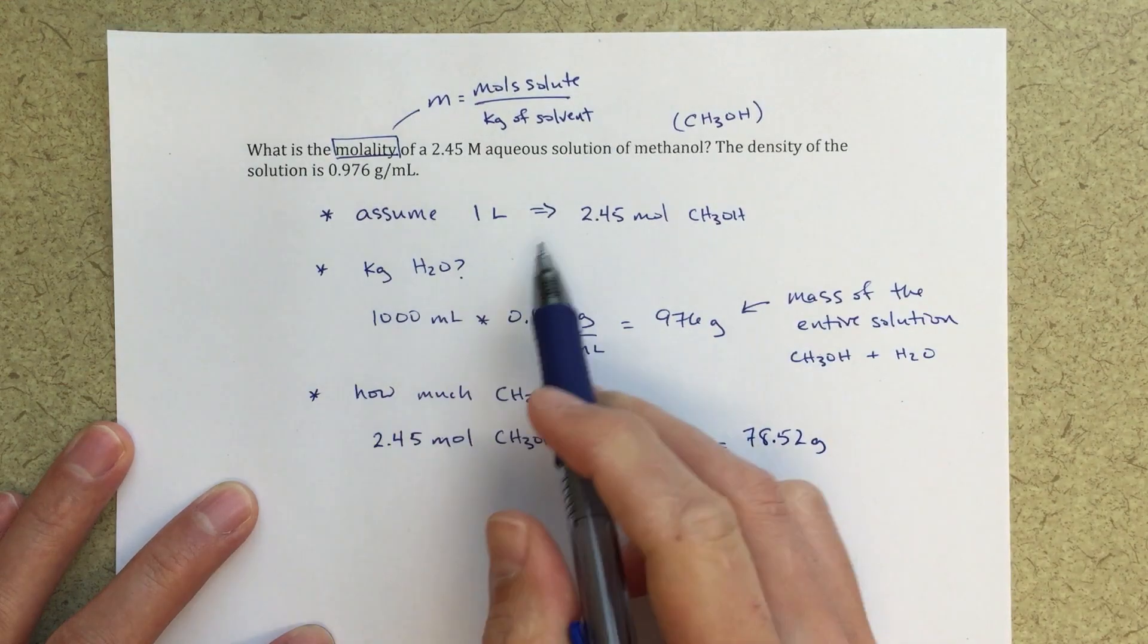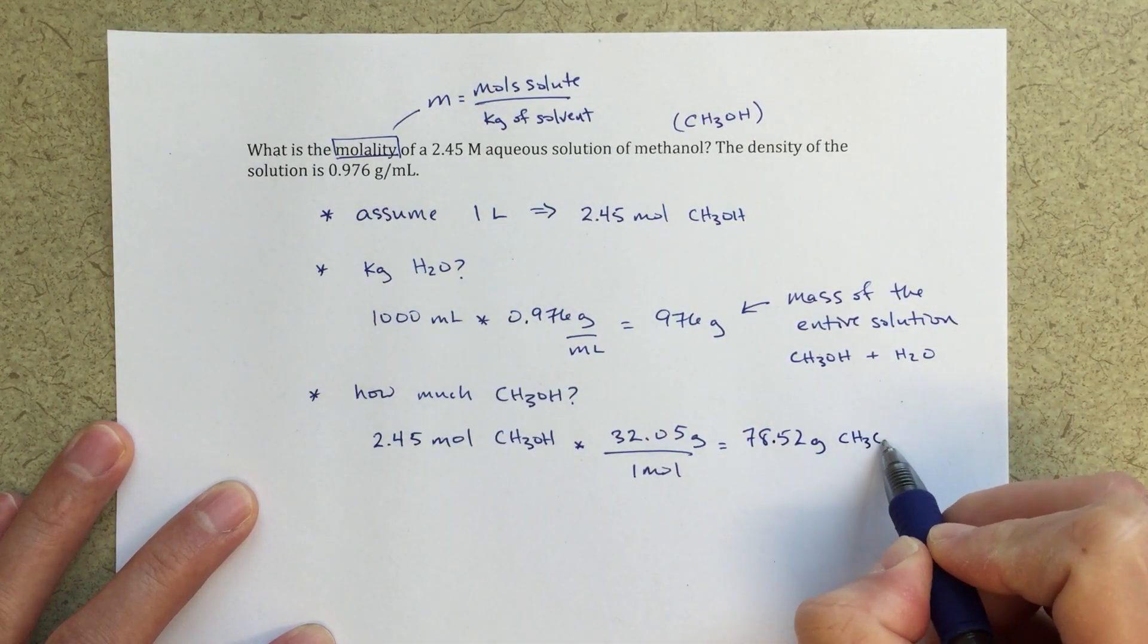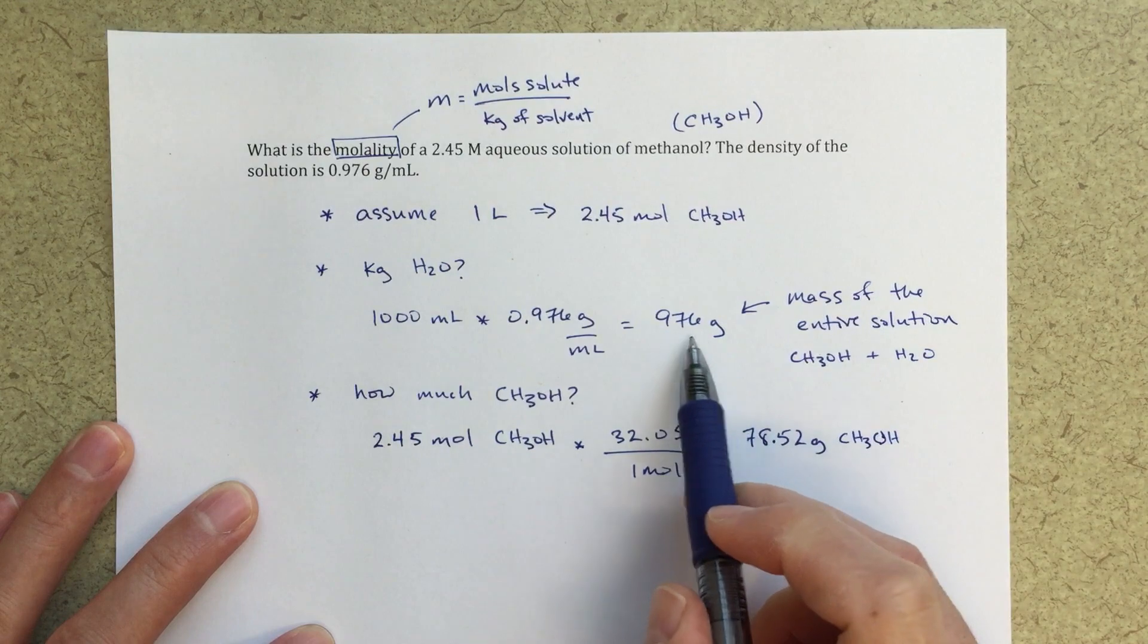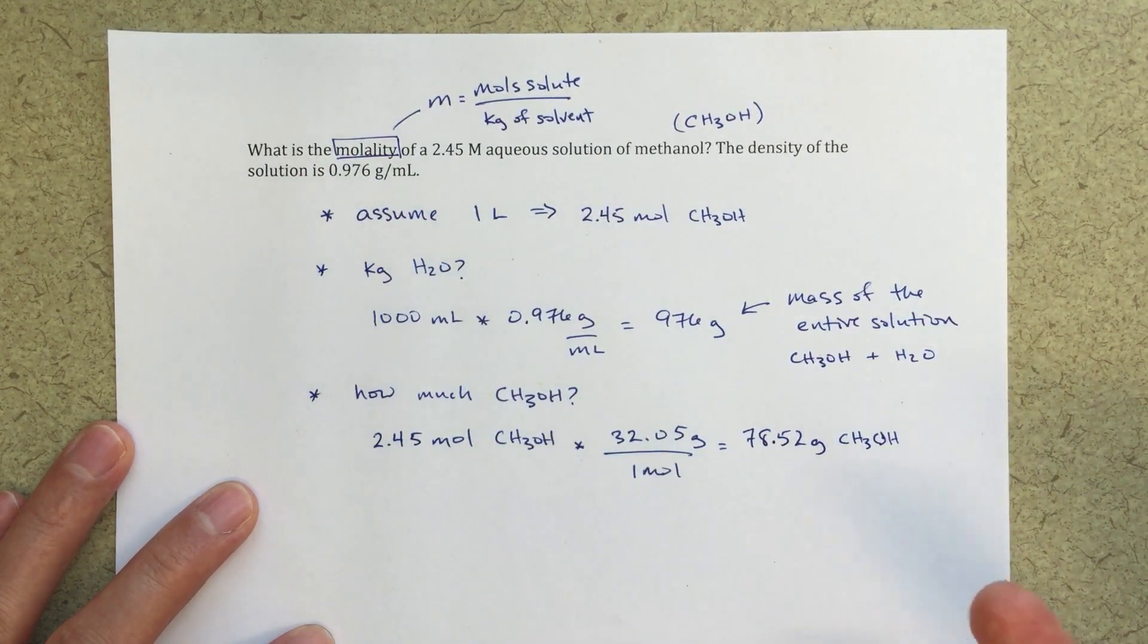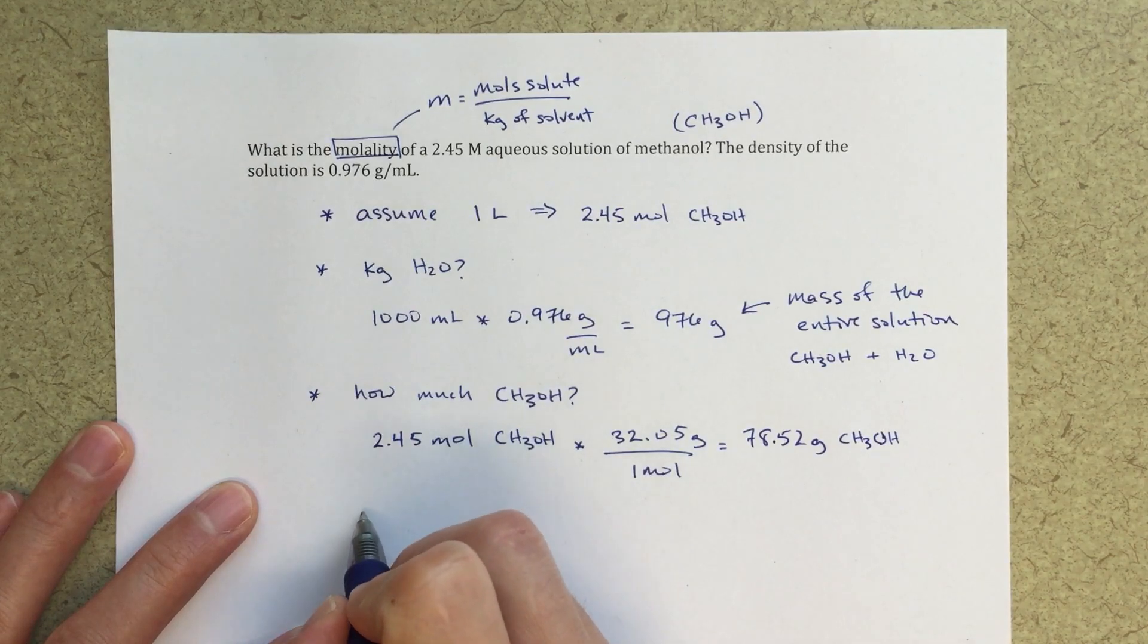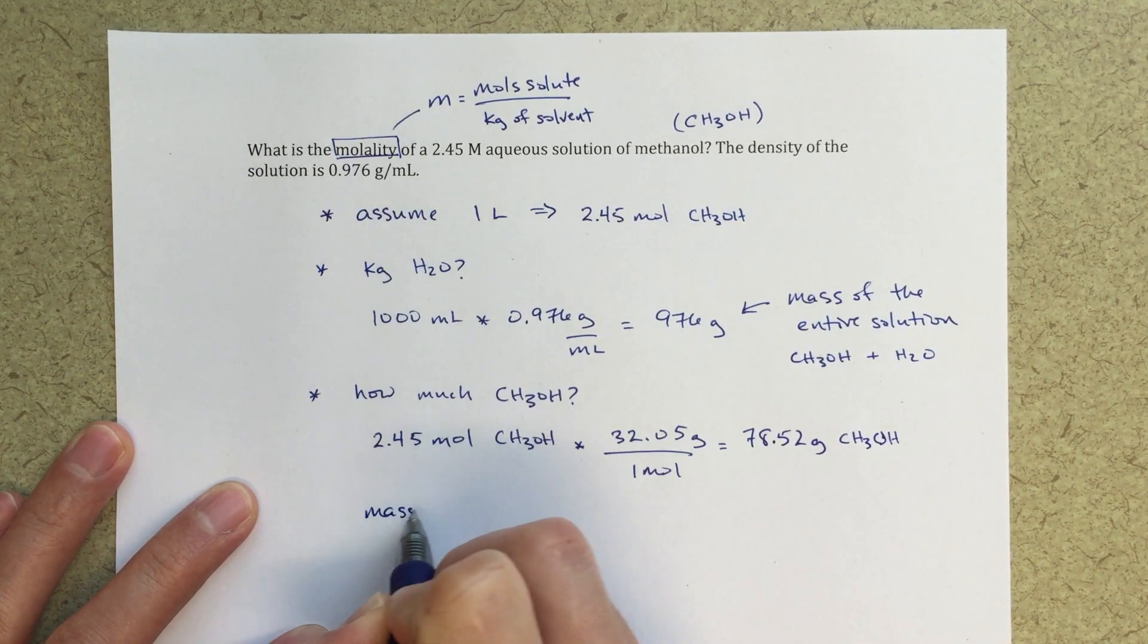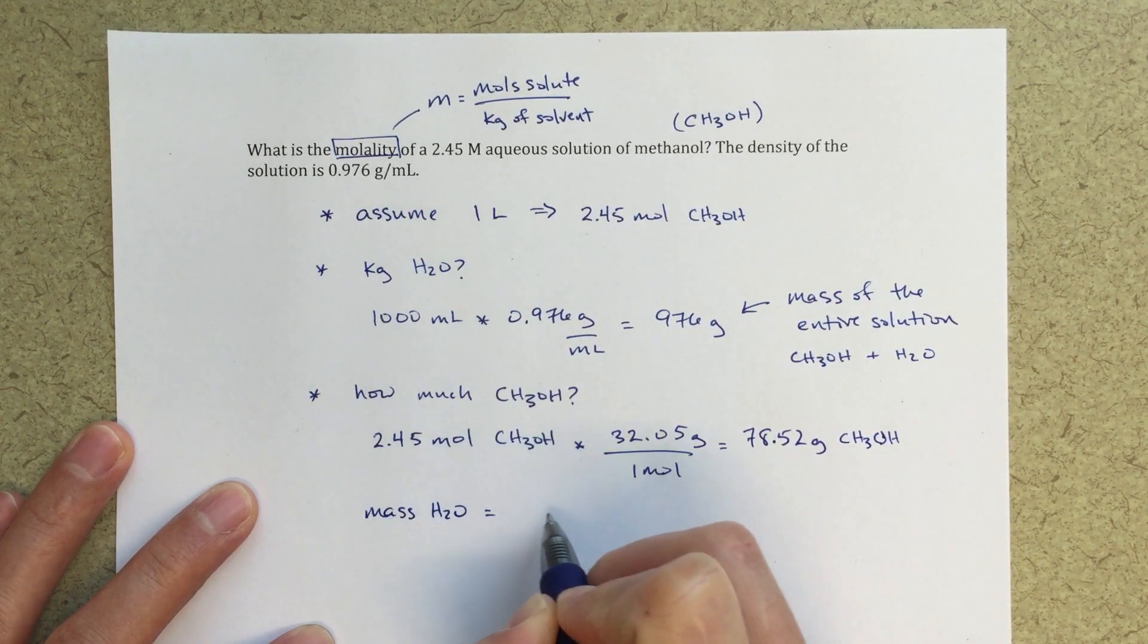So in this solution, I'm going to have 78.52 grams of methanol, and then the rest of that mass, the rest of the mass for that total solution will be from water. So I could then say that my mass of H2O is going to equal...